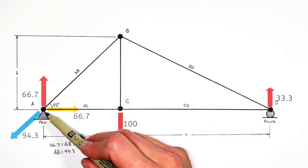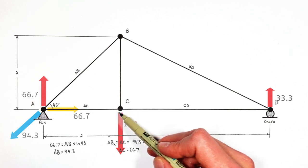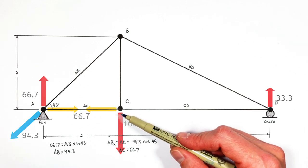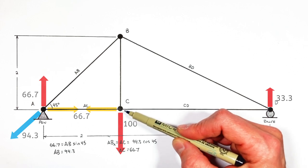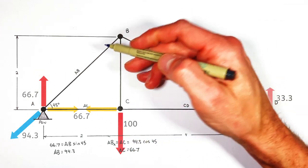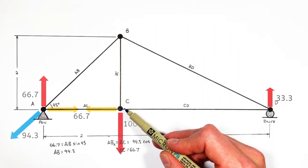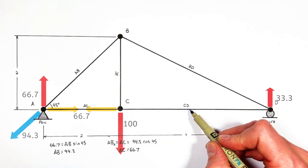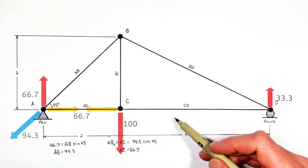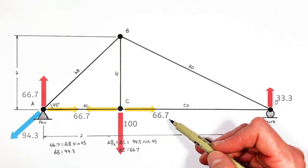Moving on to joint C: if AC is pulling to the right at joint A with a force of 66.7, then at joint C, AC is pulling to the left with a force of 66.7. There are four things acting on joint C: three beams and the load. The load is straight down and beam BC is pulling straight up, so the only other horizontal force is beam CD. If AC is pulling to the left with a force of 66.7, then CD has to pull to the right with a force of 66.7 to keep the joint from moving horizontally — no additional math needed.